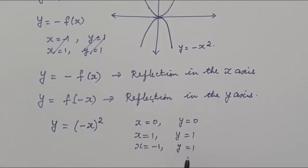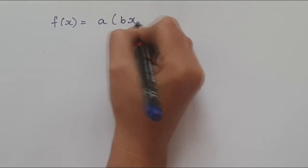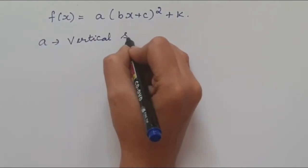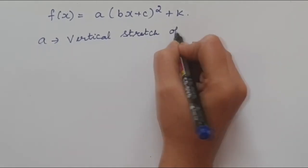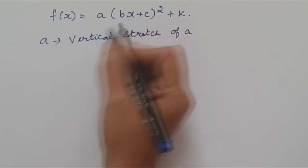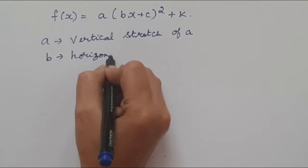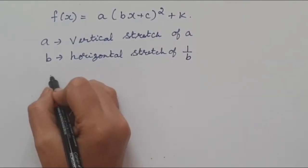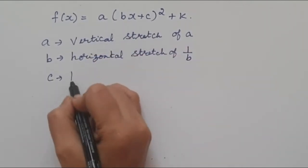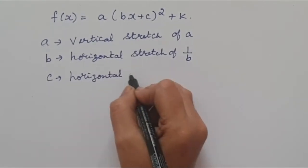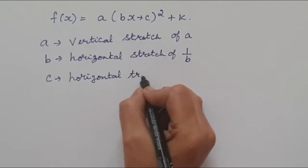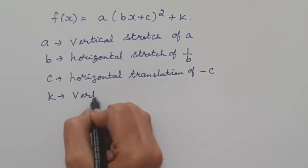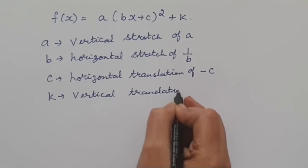The general form is f(x) = a(bx + c)² + k. In this, a is vertical and is a multiplication, so it is a vertical stretch of scale factor a. The b is inside the bracket and is also a multiplication, so it is a horizontal stretch of scale factor 1/b. The c is inside the bracket and is addition, so it is in the horizontal direction — a horizontal translation of -c. And k is outside the bracket, so it is a vertical translation of k.